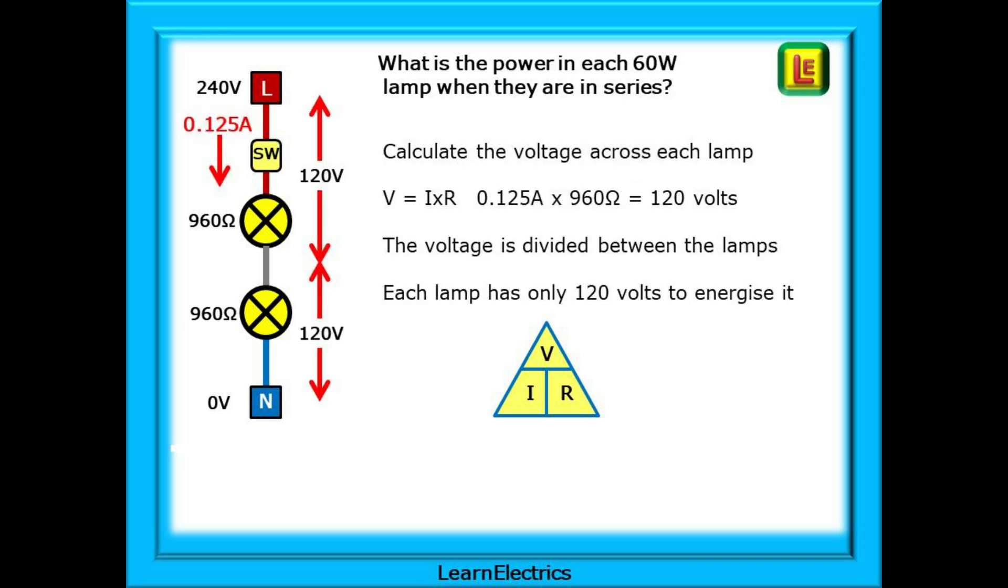Now calculate the voltage across each lamp. Voltage is current multiplied by resistance. So we have 0.125 amps multiplied by 960 ohms to give us 120 volts. The voltage is divided between the lamps. And as both lamps are the same resistance, the voltage is divided equally.